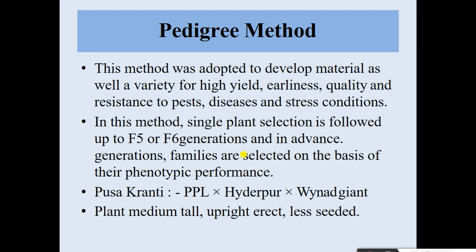The next important method is the pedigree method. This method is adapted to develop varieties with high yield, earliness, quality, and resistance to pests, diseases, and stress conditions. Single plant selection is followed up to F5 or F6 generations, and in advanced generations, families are selected on the basis of their phenotypic performance. A variety developed by the pedigree method is Pusa Kranti.